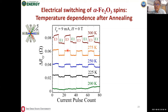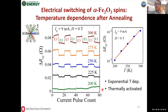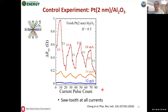Temperature dependence of switching is studied at 9 mA pulse current. At 300 K, clear square-wave switching is observed. As temperature decreases from 300 K, the switching magnitude becomes progressively smaller, vanishing around 200 K. This indicates the switching process is thermally activated: thermal energy is needed to allow antiferromagnetic spins to switch, and at low temperatures the spins are frozen and cannot be switched even with the same current.